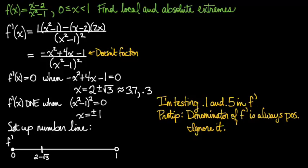I simply ignore it. I completely ignore it. And I'm only looking at the numerator to find out if f prime is positive or negative. So I quickly find out that f prime of 0.1 is negative, f prime of 0.5 is positive, and so I decorate my number line with the minus and the plus. And as usual, this means that 2 minus radical 3 is going to be a local min.